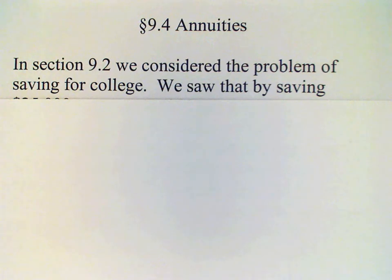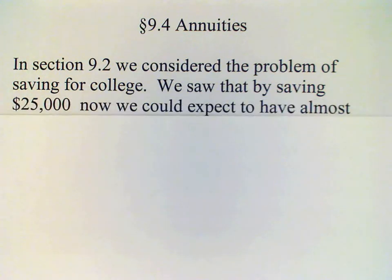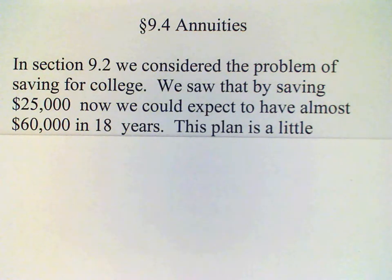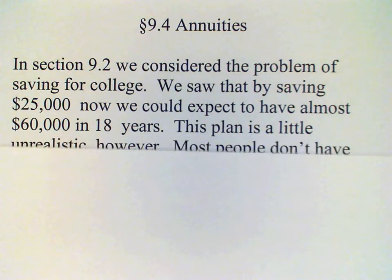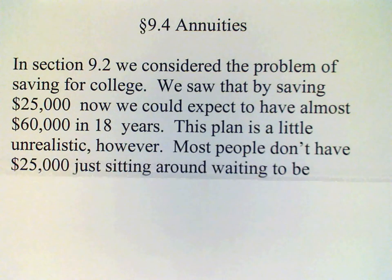In section 9.2 we saw an example of a couple that wanted to save money for their newborn's college education, and we worked out that if they put $25,000 in the bank now then they could expect to have $60,000 available in 18 years for that child's college. The only problem with this plan is that most young couples don't have $25,000 just sitting around waiting to be deposited.